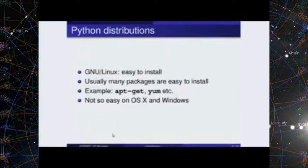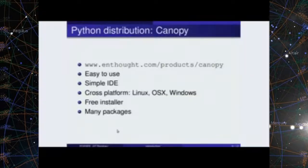On Linux, it is relatively easy to install these packages because they are typically packaged by the distributor. For example, if you're using any Debian derivative like Ubuntu, you can just apt-get install certain Python packages and you'll get those packages automatically. Similarly, with Red Hat you can use Yum. However, this is not so easy on OS X and Windows. This is where we have what are called Python distributions — these allow you to install Python along with all various packages that are of interest in the community to install them easily.